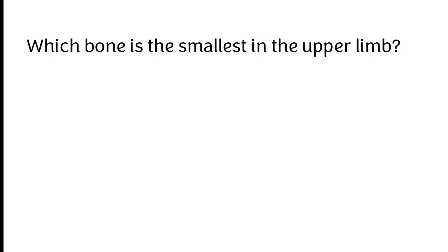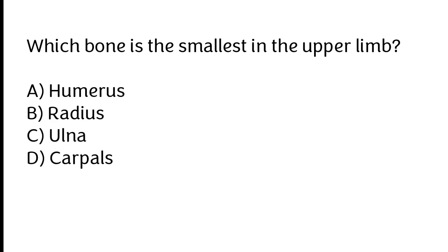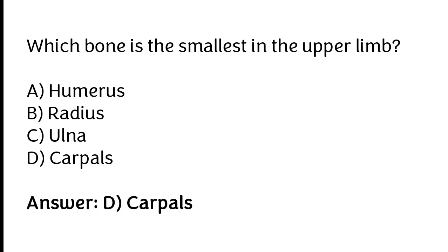Which bone is the smallest in the upper limb? Humerus, radius, ulna, carpals. The correct answer is option D — the carpal bones are the smallest bones in the upper limb.